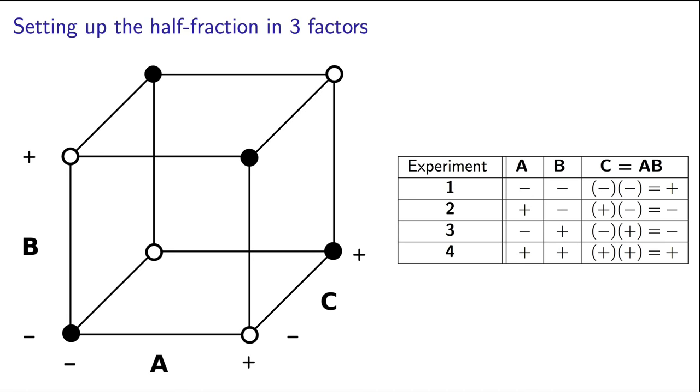Let's visualize where those 4 points are on the original cube. The first row is at low A and low B and high C, so it appears here. The next point is at high A, low B and then low C, so that's over here. The third experiment is there, and the last experiment is at high A, high B and high C. Notice how that corresponds to the ideal selection of 4 experiments we made at the start of this video.